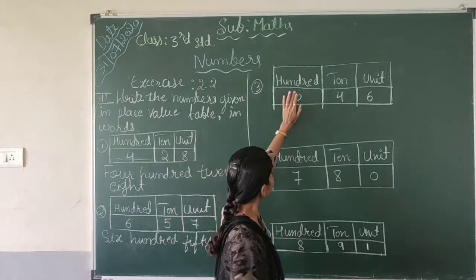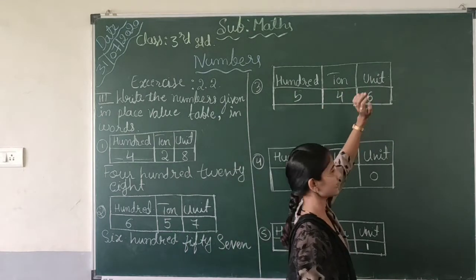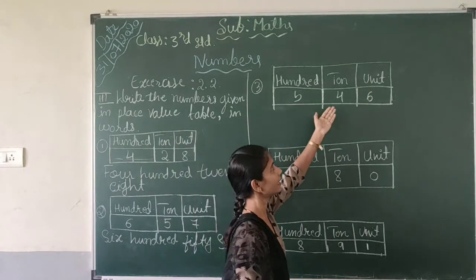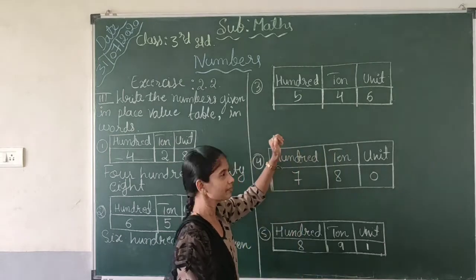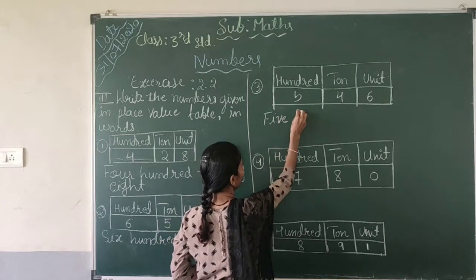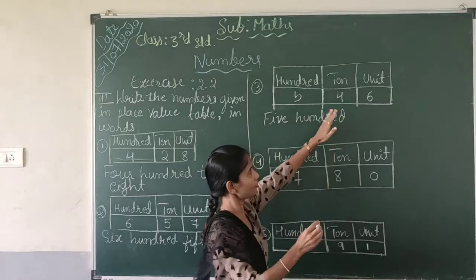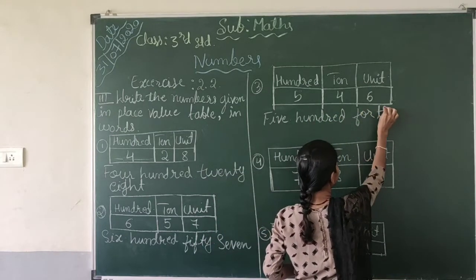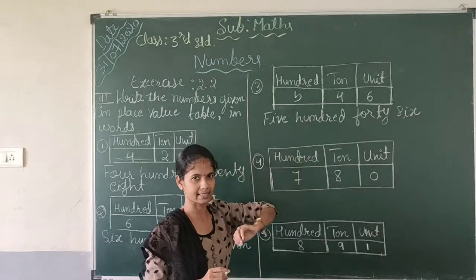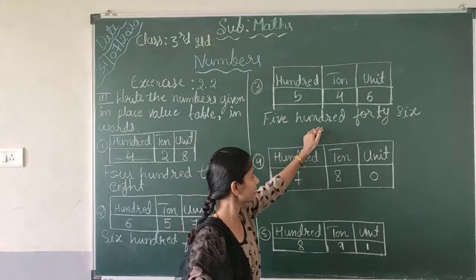Third one: 5 is in the 100's place, 4 is in the 10's place, and 6 is in the units place. Total: five hundred forty-six. Write in words: F-I-V-E hundred, F-O-R-T-Y — forty — six. Five hundred and forty-six.